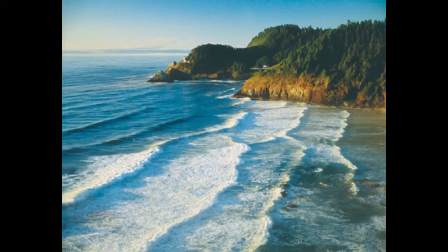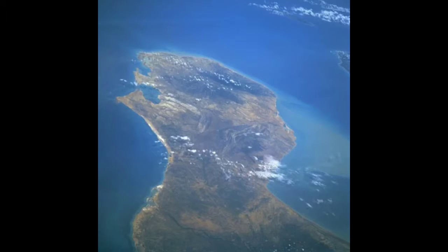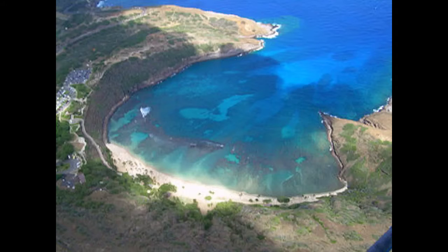A coast is land that borders the sea. A gulf is an arm of an ocean or sea that is partly enclosed by land. A peninsula is a piece of land that is surrounded by water on three sides. A bay is part of a body of water that is partly enclosed by land.